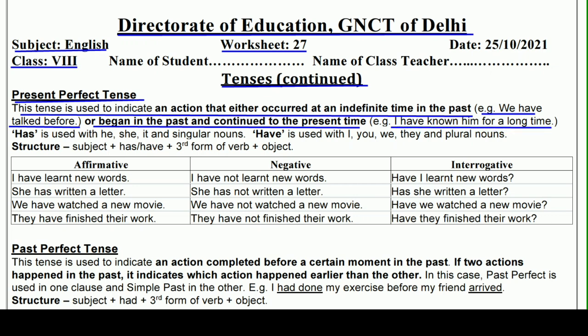I have known him for a long time. यानि I, U, V, they के साथ अगर more than one person है तो हम 'have' का use करते हैं। Single चीज़ — he, she, it के साथ 'has'। I, U, V, they और plural nouns के साथ 'have' use करना है।